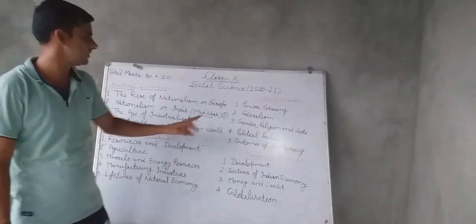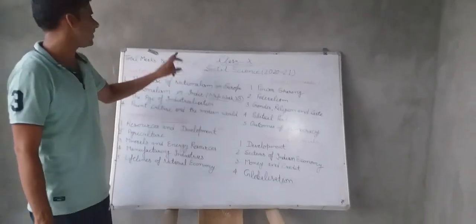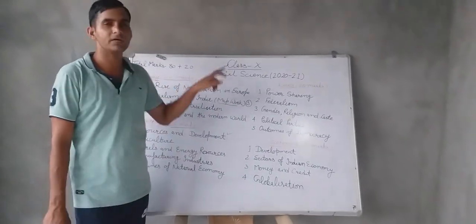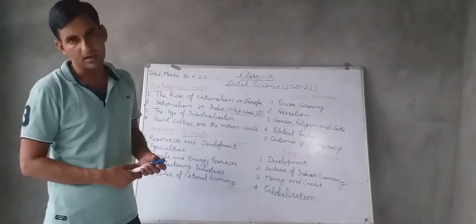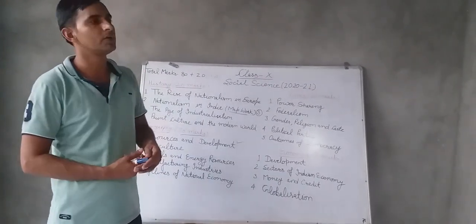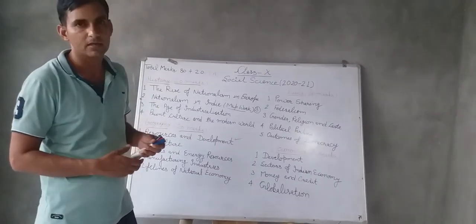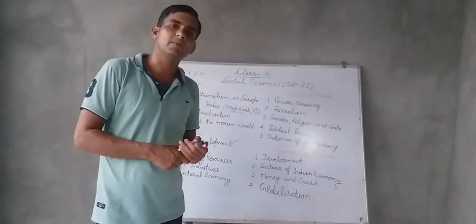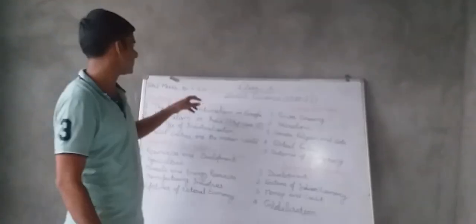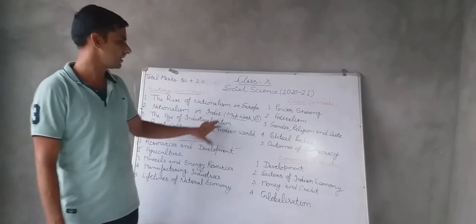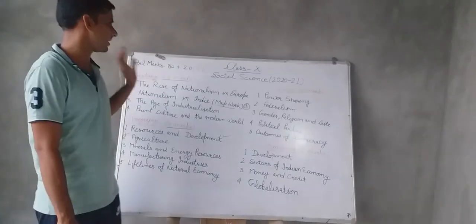The breakdown is 20 marks for history, 20 marks for geography, 20 marks for civics, and 20 marks for economics. Additionally, 20 marks is for internal assessment, which includes project work and portfolio — the achievements you have gained in this particular year — worth five marks, and five marks for classwork and homework. This is the complete syllabus for the final year of 10th class social science.